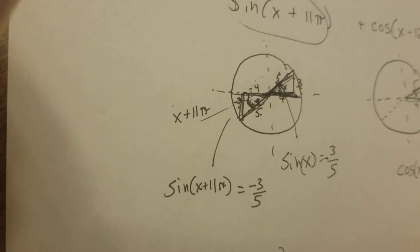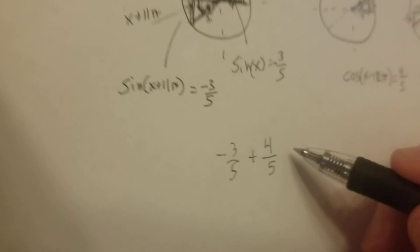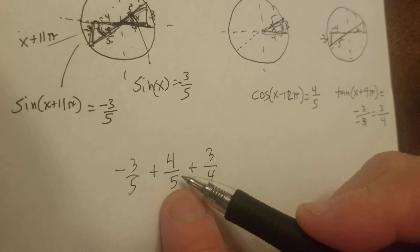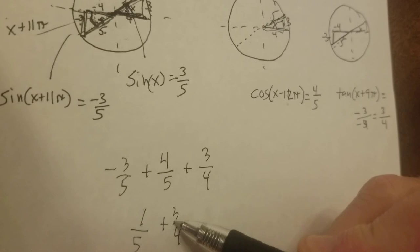So the first term was minus 3 over 5, and then the middle term was plus 4 over 5, and the last term, which I think is an addition, is plus 3 over 4. So we have to do those. So what I'm going to do is collect my terms. Minus 3 over 5 plus 4 over 5, those are both over 5. So I got a minus 3 and a plus 4, so that becomes 1 over 5.